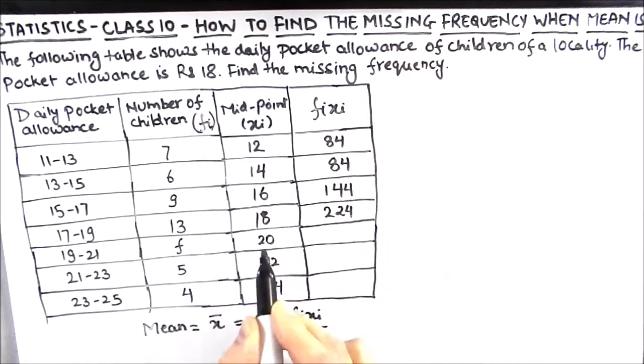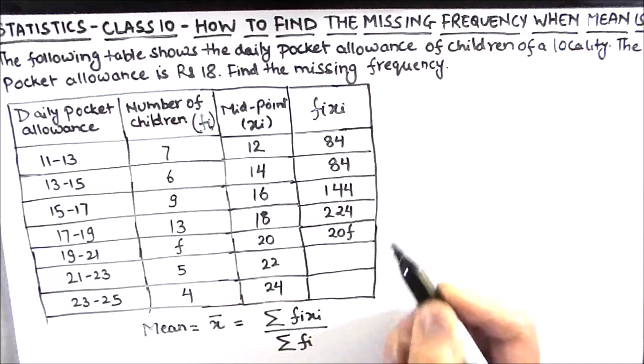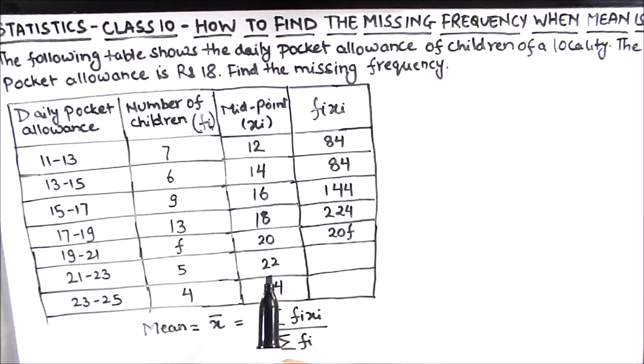This is f times 20 will be 20f, 5 times 22 is 110, and 24 times 4 is 96.